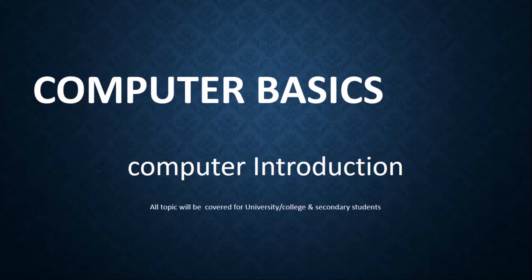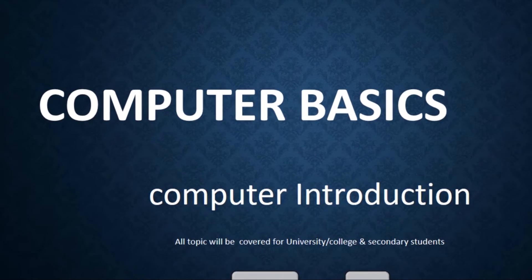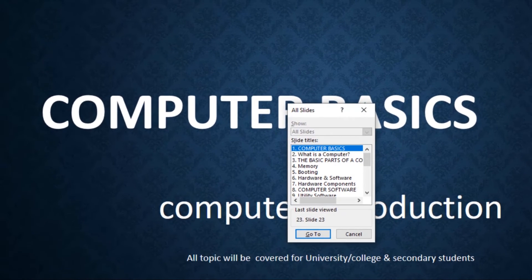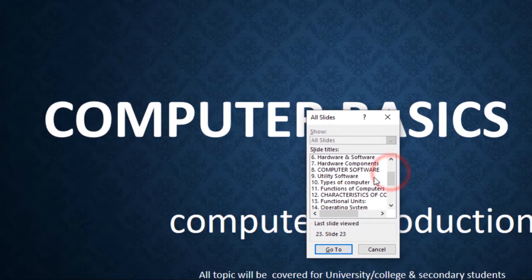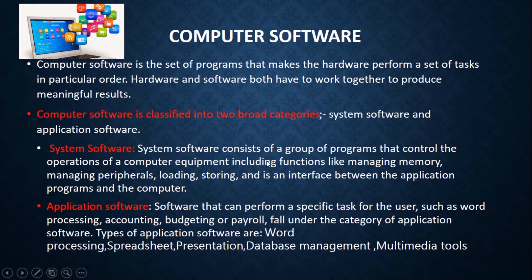The other shortcut is to choose from a list of your slides. Just press Control S and this list will pop up. Then from here, you can select the slide you want to jump to, then click Go To and it will take you to that slide.